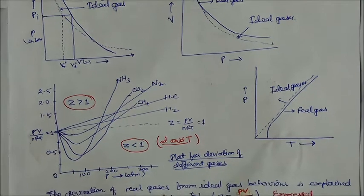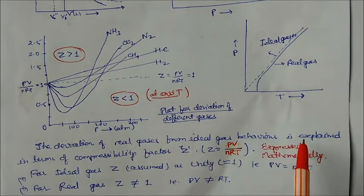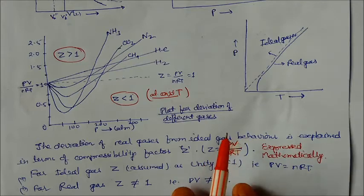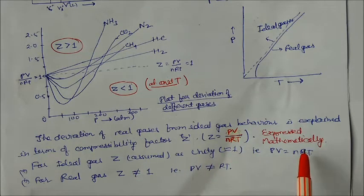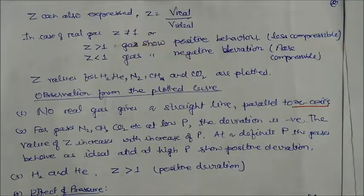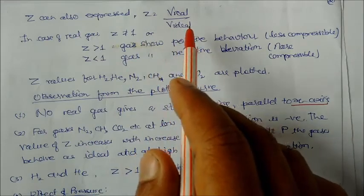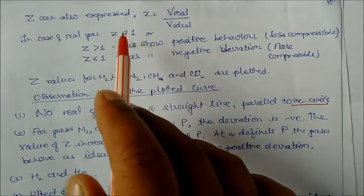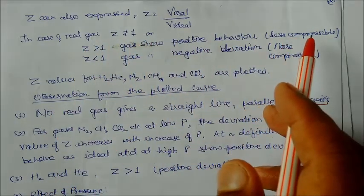The deviation of real gases from ideal gas behavior is explained in terms of the compressibility factor Z, which equals PV/nRT, expressed mathematically. For ideal gas, Z equals 1, meaning PV equals nRT. For real gases, Z is not equal to 1, so PV is not equal to nRT. The compressibility factor can also be expressed as Z equals V-real divided by V-ideal.